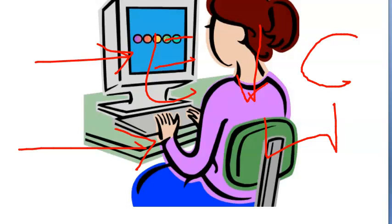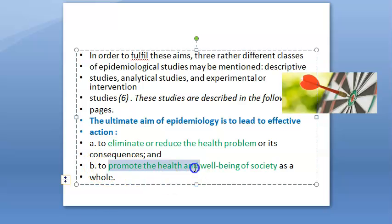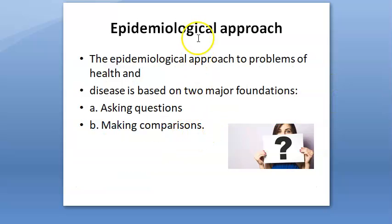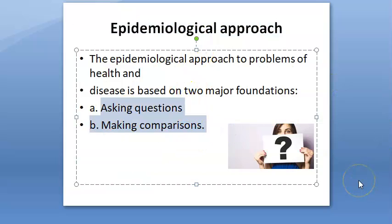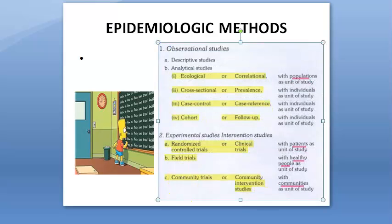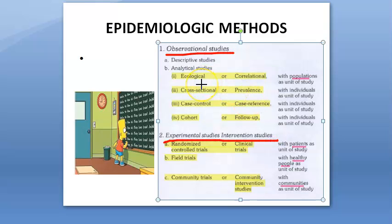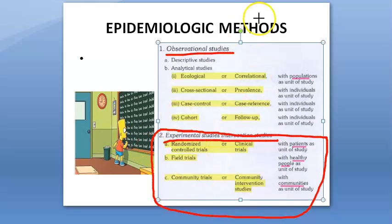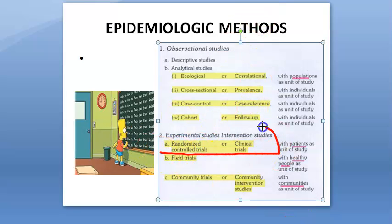The two ultimate aims are: to eliminate or reduce the health problem and its consequences, and to promote health and well-being of society as a whole. The approaches involve asking questions and making comparisons. Studies can be observational or experimental — observational means no intervention, while experimental means giving a drug or some intervention, such as randomized controlled trials or clinical trials.